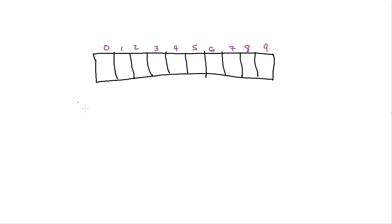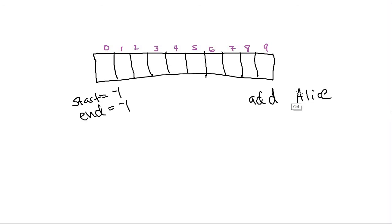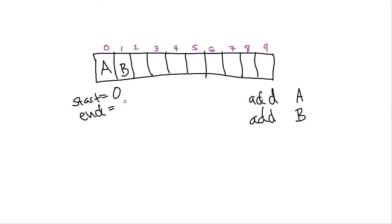We'll initially set both start and end equal to negative one, just like the top variable for a stack. When we enqueue something — let's add A — it goes in the first cell, and both start and end become zero. Then we add B, which goes in the next slot: start remains at zero, end becomes one. We have two pointers into the queue — one for the head of the line, one for where we're adding new items.